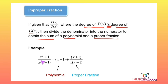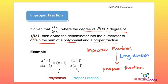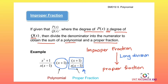For example, if we are given the expression x³ + 1 over x(x − 1), the degree of the numerator is 3 and the degree of the denominator is 2. Since the degree of the numerator is more than the degree of the denominator, this is an improper fraction. We perform long division to obtain a polynomial part plus a proper fraction part.